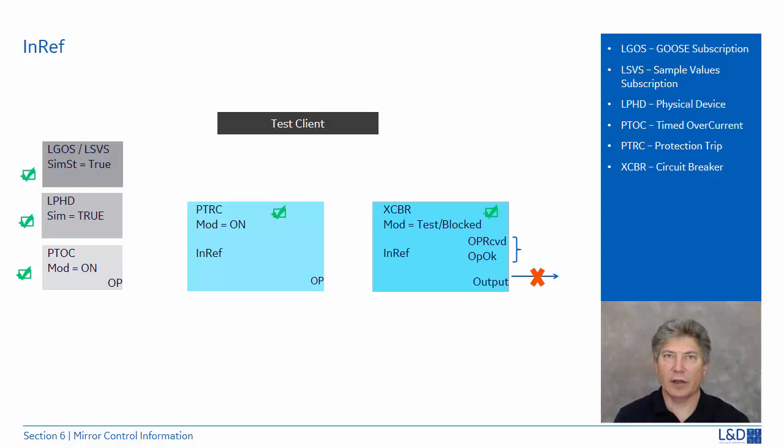Next, the test client sends a sample value message with the simulation flag set. The signal is accepted, triggering a time overcurrent to operate flag.